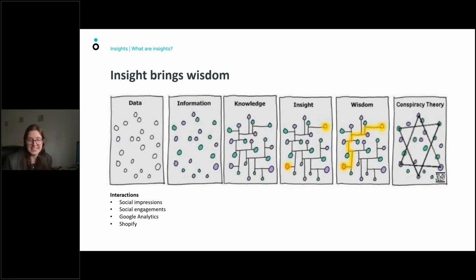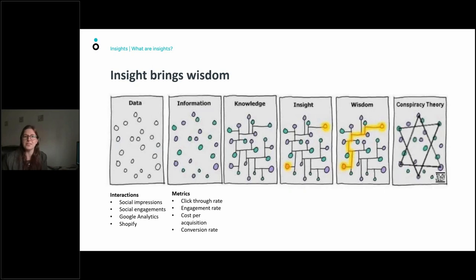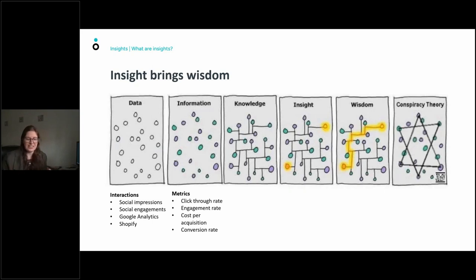You start off with the raw, unprocessed data — your social media impressions, your engagements, what you can see from Google Analytics such as what pages people land on and what they do when they arrive on your website, and finally using your sales system such as Shopify to see what people are buying. Once you have this, you gain information by adding context — you look at the who, the what, the when, and the where, such as the most frequently bought products or the click-through rate.